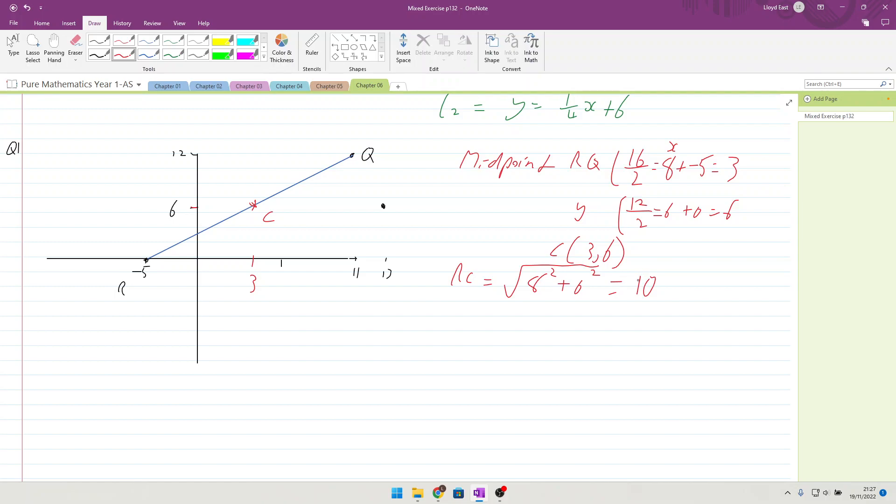Write down the equation of the circle. So part C, the equation is x minus the x coordinate which is 3 squared, plus y minus the y coordinate of 6 squared, equal to the radius squared.